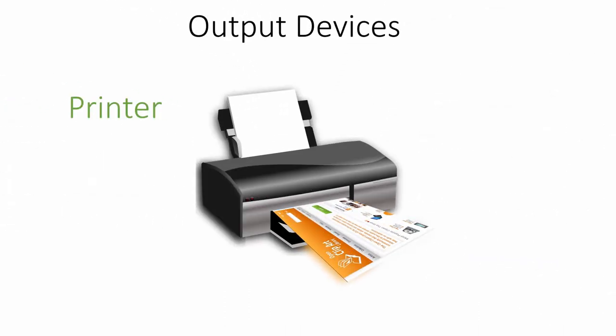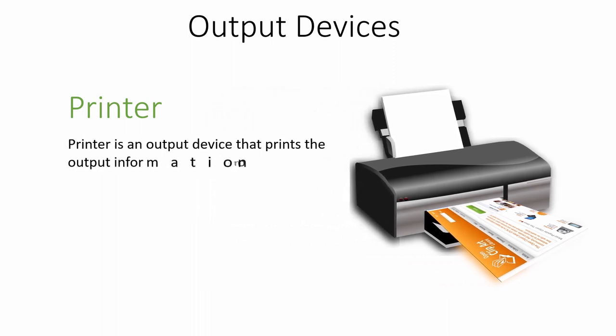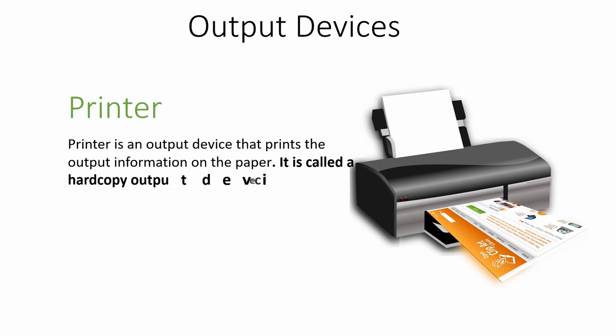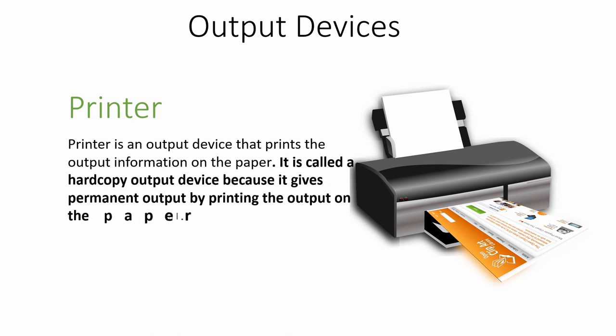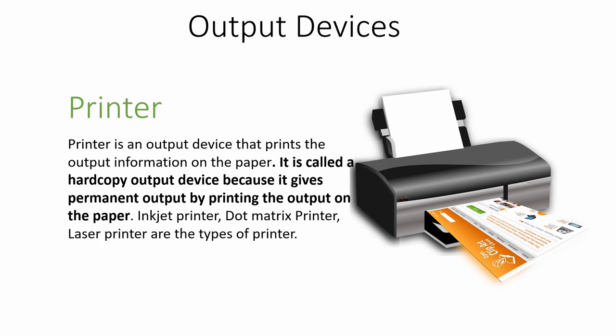Similarly, the printer is another important output device of a computer system. It is a hard copy output device that prints output information on paper. It is called a hard copy output device because it gives permanent output on paper. Inkjet printer, dot matrix printer, and laser printer are some types of printers that help to print output information.